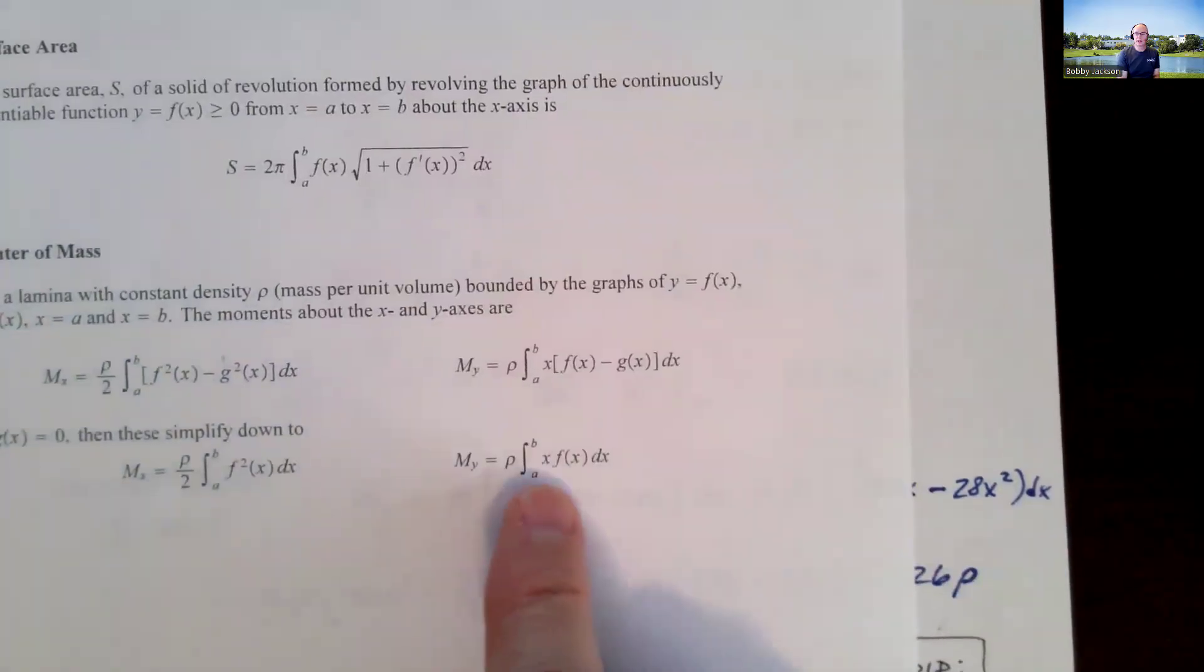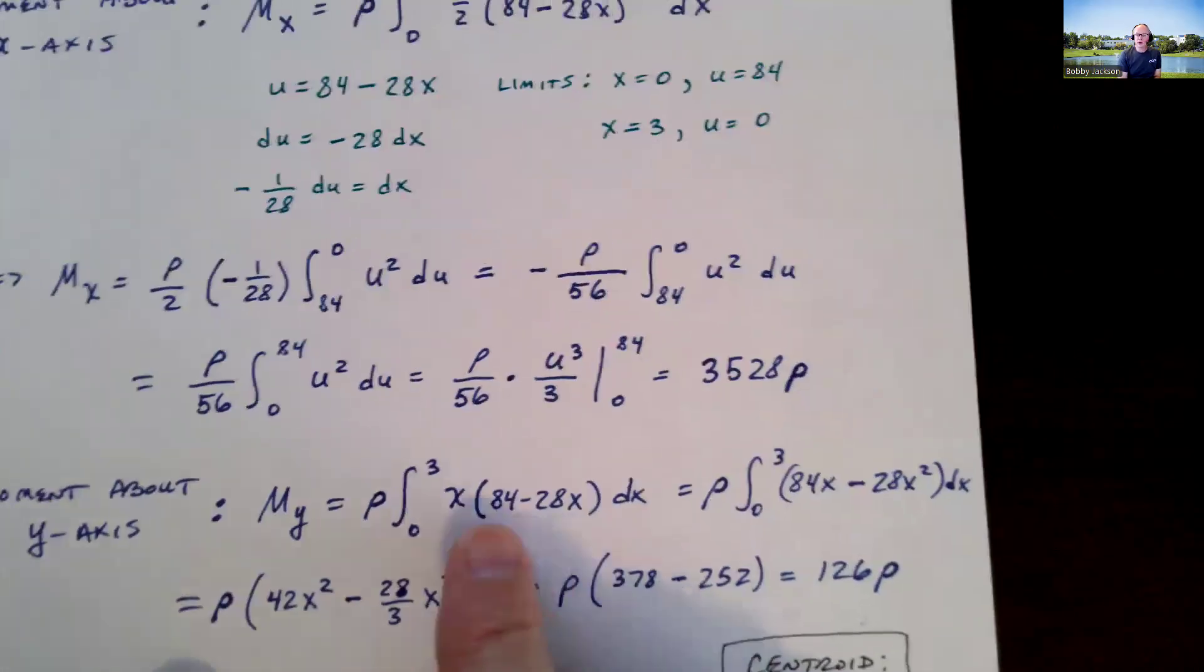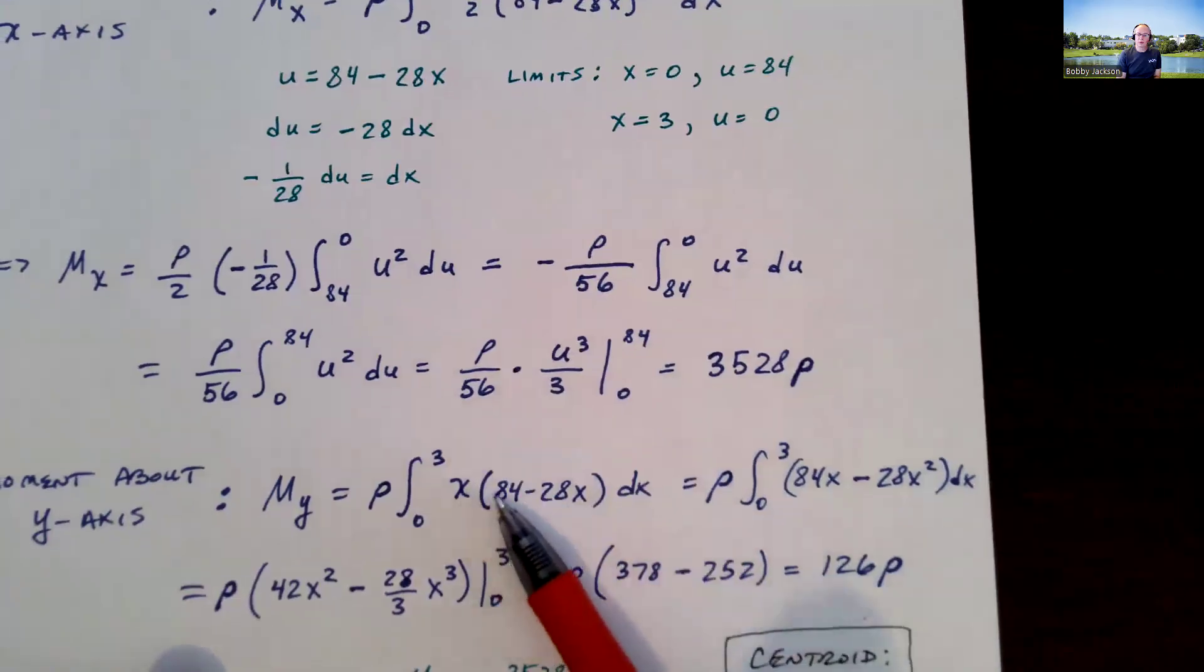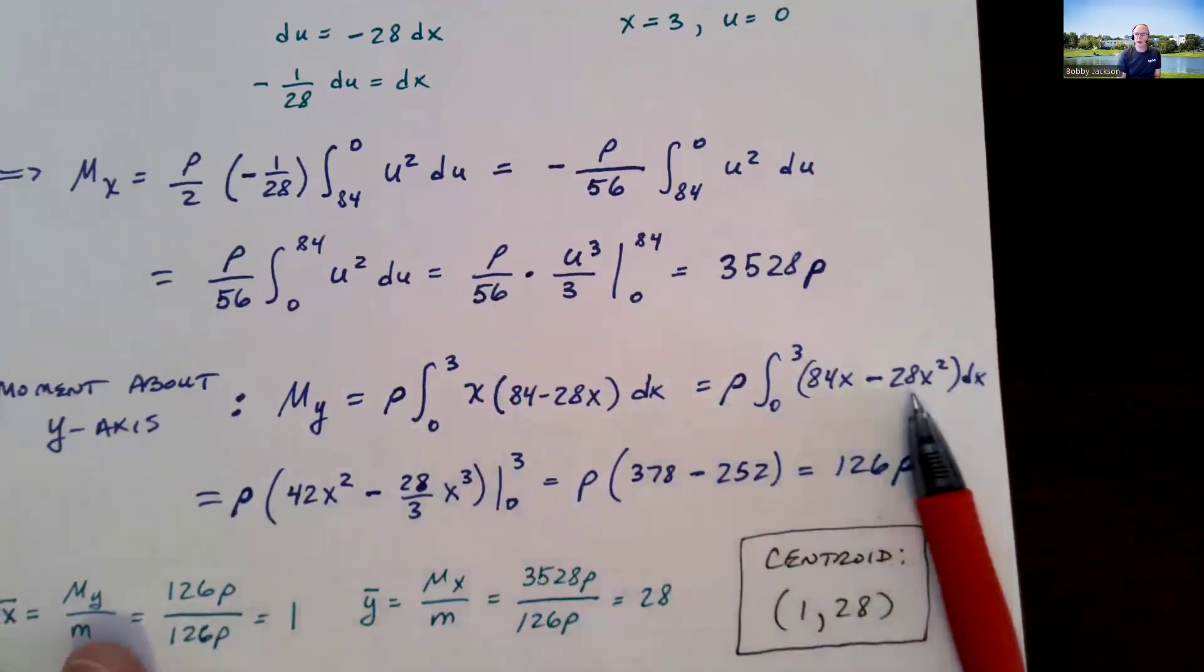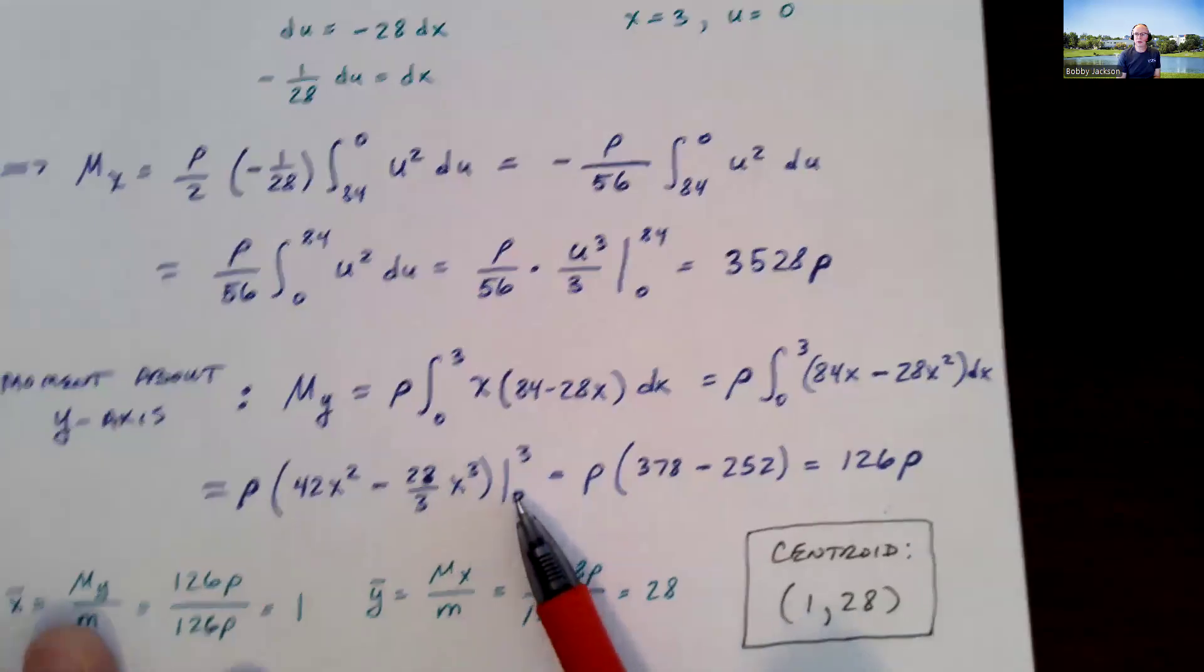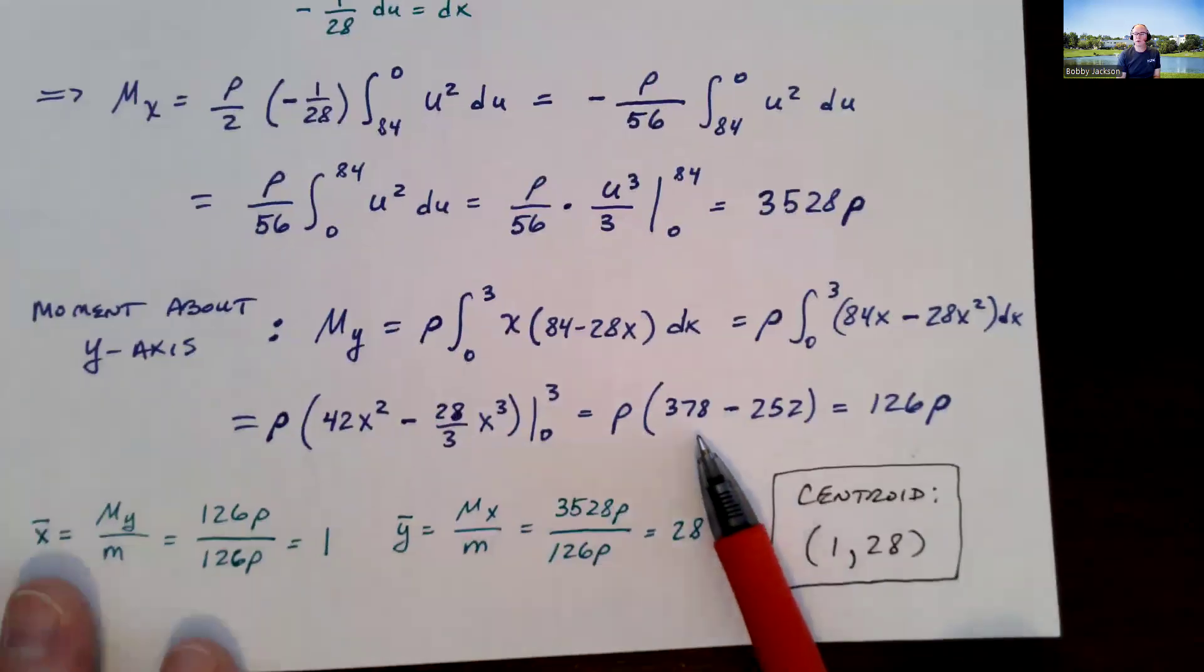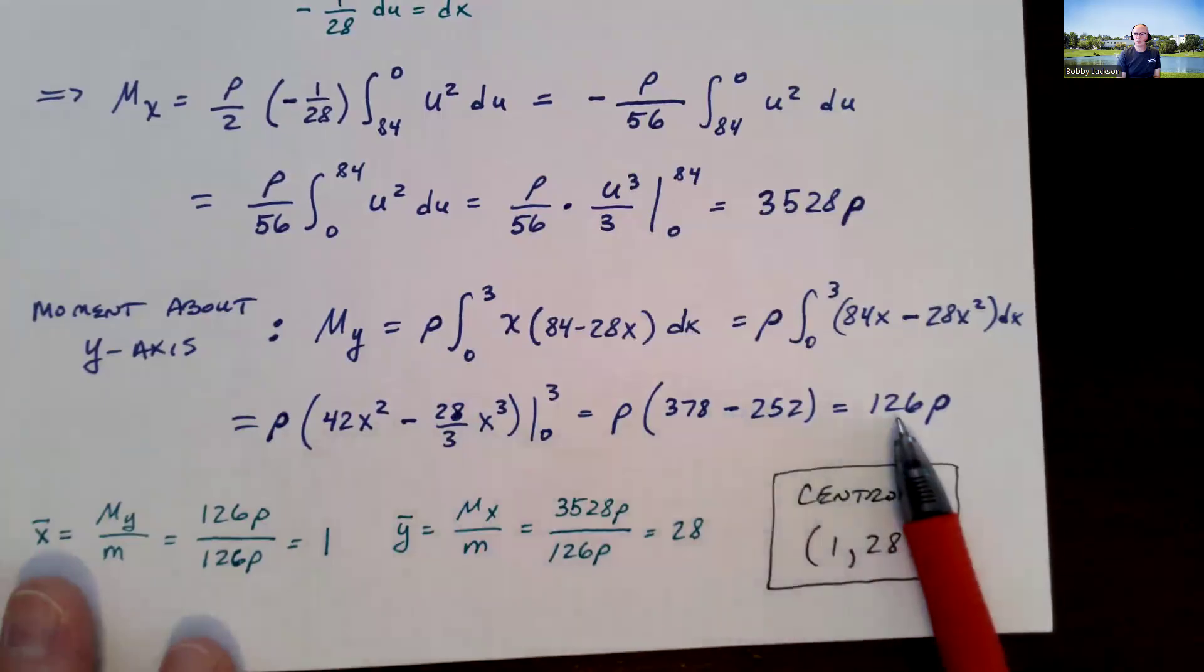The moment about the y-axis is density times the integral of x times f(x). And so I've got x times f(x) here. Go ahead and simplify first by distributing the x. And then find the antiderivative of 84x and 28x squared. Plug in the upper limit of 3, lower limit of 0, subtract. Plugging in 0, we get 0. So plugging in 3, we get these two quantities. That gives me 126 rho.